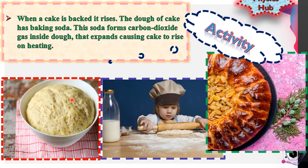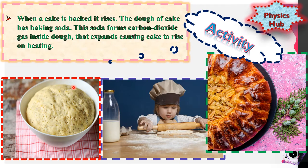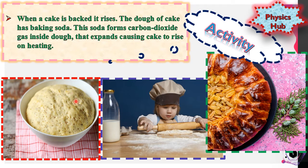Another example is when a cake is baked. The cake is made using baking soda. This soda forms carbon dioxide gas inside the dough. When you provide heat to bake the dough, this shows the expansion of the cake.